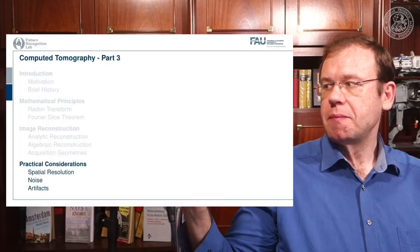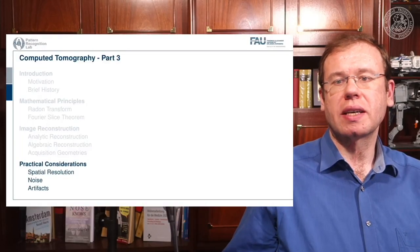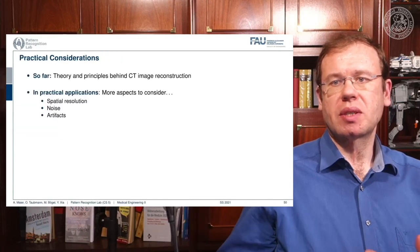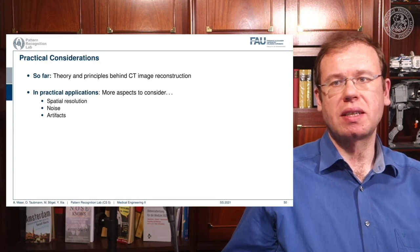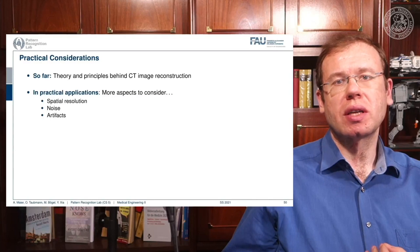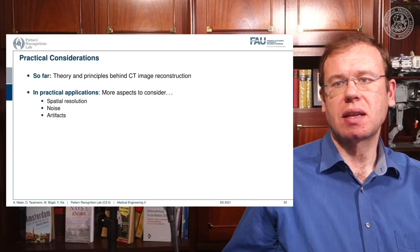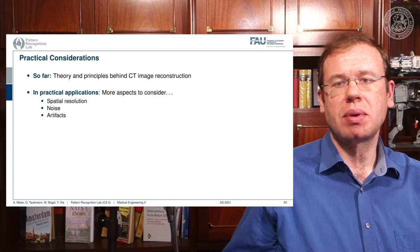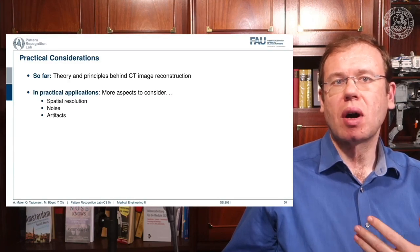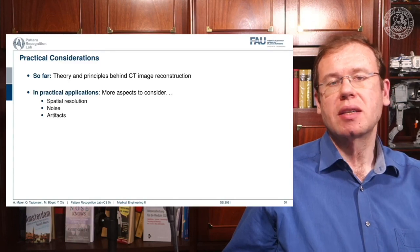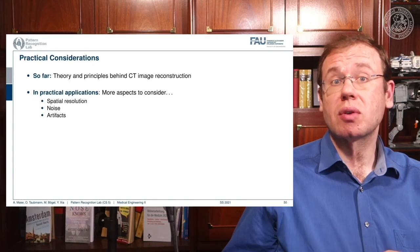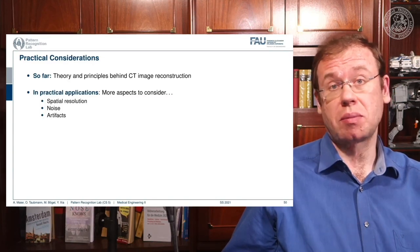Part three of CT covers spatial resolution, noise, and artifacts. So far, we had theory and principles of CT and how to reconstruct the images. Now we want to look into practical applications: how the resolution of the system should be, the different noise properties, and how artifacts look. These are design aspects you have to consider before you actually build the system.